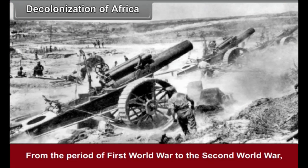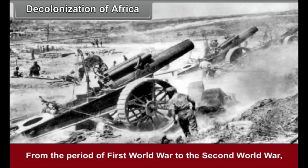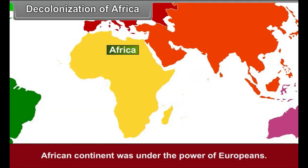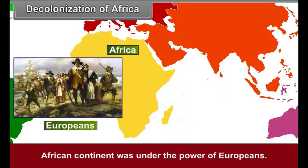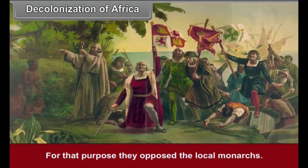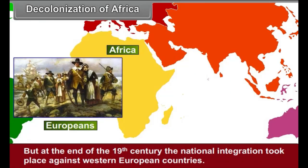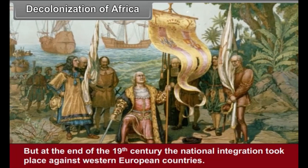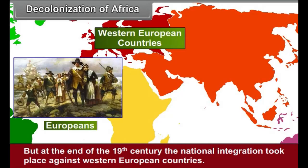Decolonization of Africa: From the period of the First World War to the Second World War, the African continent was under European power. Europeans had not easily obtained power over the African continent; for that purpose they opposed the local monarchs. But by the end of the 19th century, national integration took place against Western European countries.